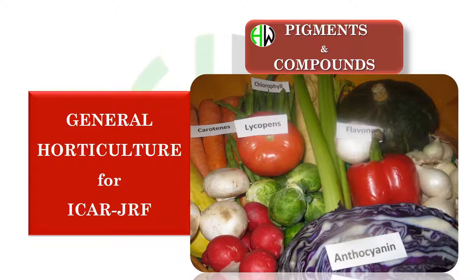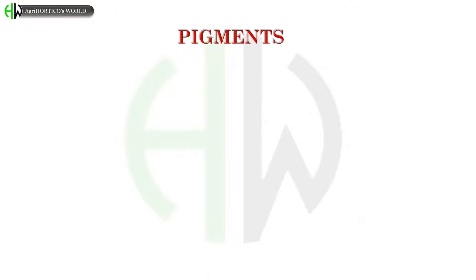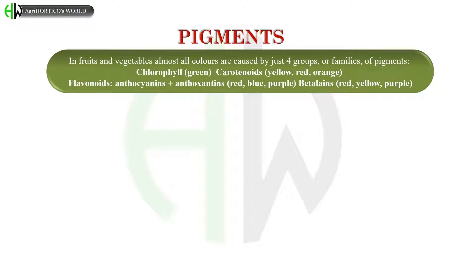Before knowing directly about pigments or compounds present, let's have a brief idea about pigments in plants. What is a pigment? Biological pigments, also known simply as pigments or biochromes, are substances produced by living organisms that have a color resulting from selective color absorption. In fruits and vegetables, almost all colors are caused by just four groups of pigments: chlorophylls, carotenoids, flavonoids and betalains.